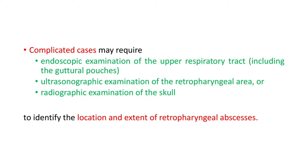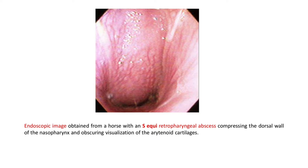In complicated cases, diagnosis may require endoscopic examination of the upper respiratory tract including the guttural pouches, ultrasonographic examination of the retropharyngeal area, or radiographic examination of the skull to identify the location and extent of retropharyngeal abscesses. Here you can see an endoscopic image from a horse with Streptococcus equi retropharyngeal abscess, where the abscess is compressing the dorsal wall of the nasopharynx, obscuring visualization of the arytenoid cartilages.